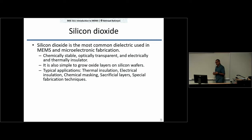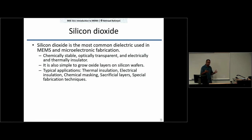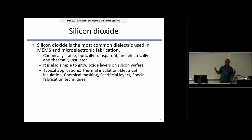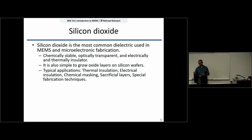We use silicon dioxide a lot in processing to mask areas of the wafer we want to protect from a chemical or physical step. In doping, for example, the openings through which doping is performed could be through a layer of silicon dioxide — we can deposit or grow 500 nanometers of silicon dioxide and create openings in that layer through which we do the doping.